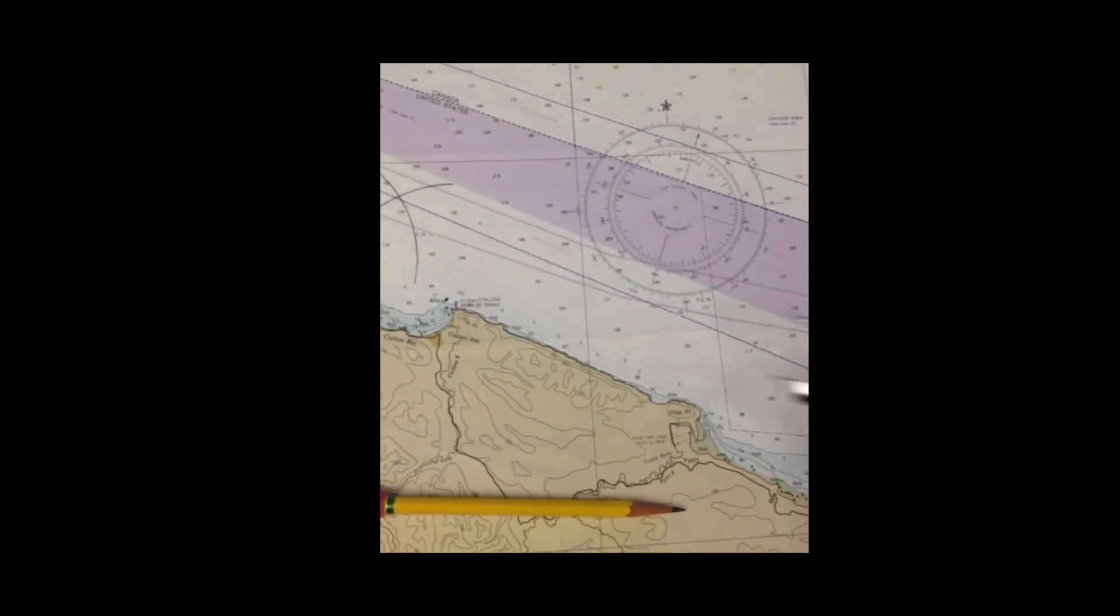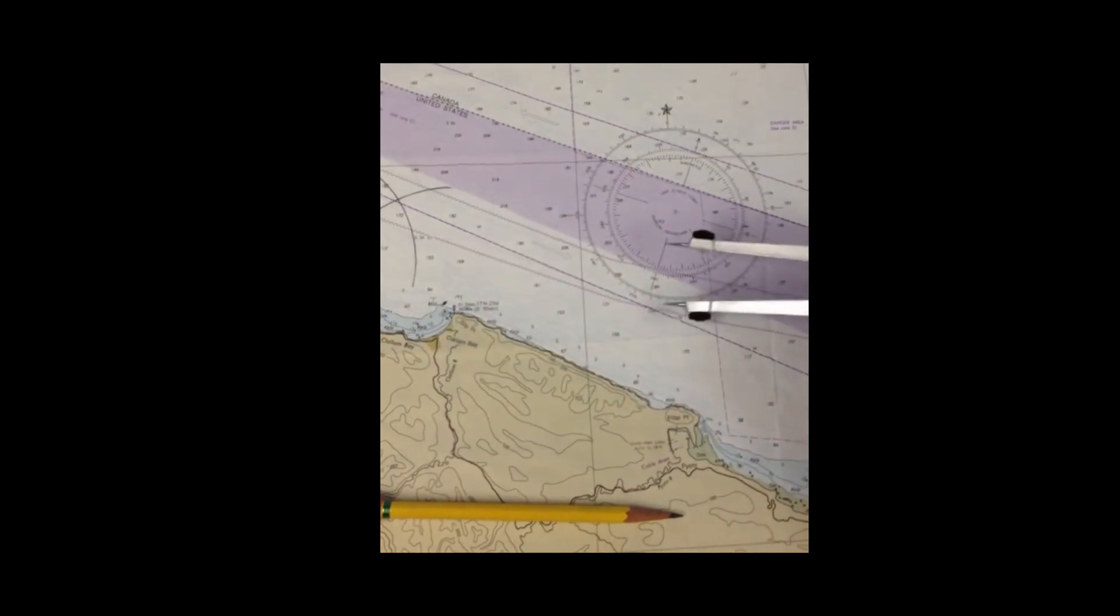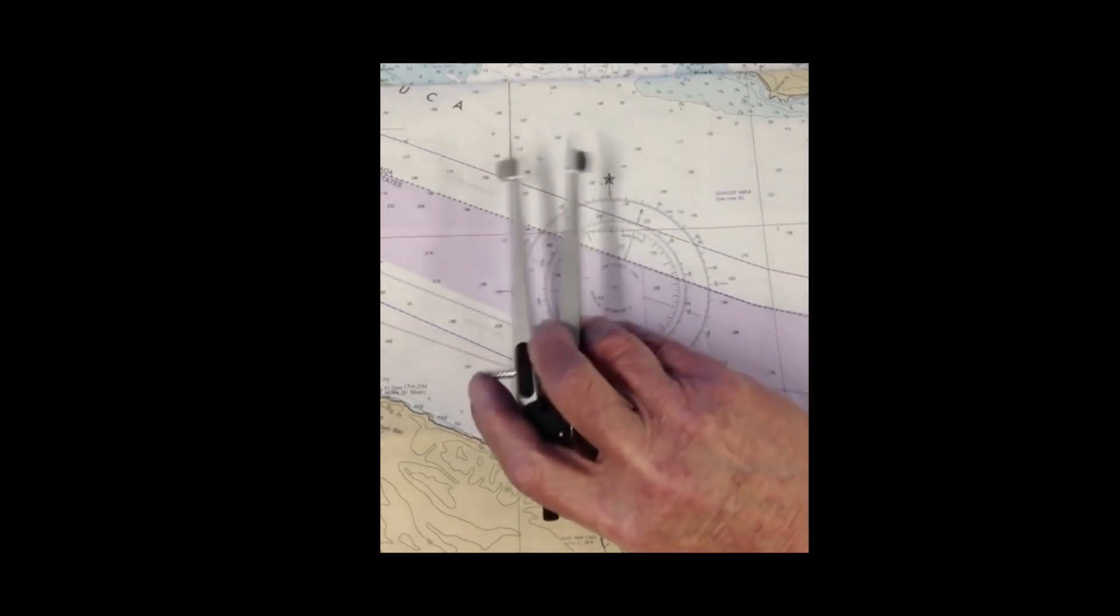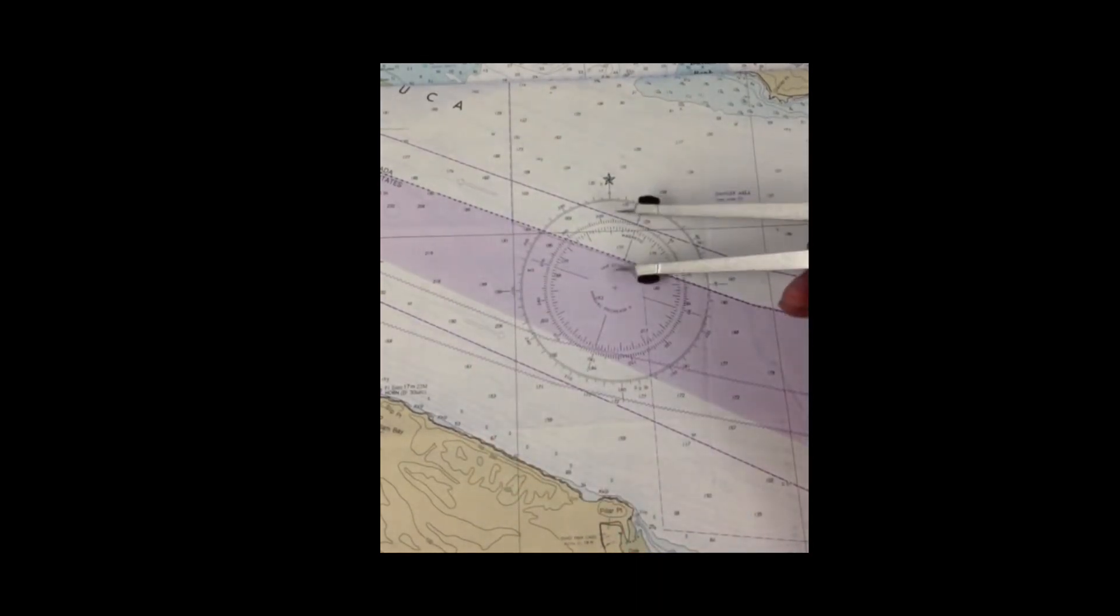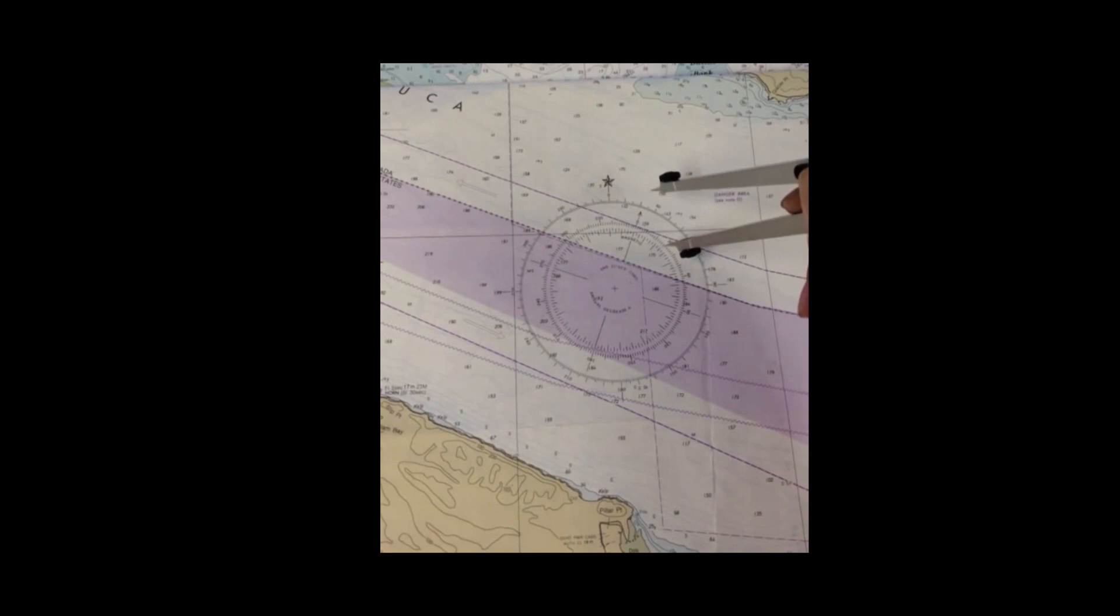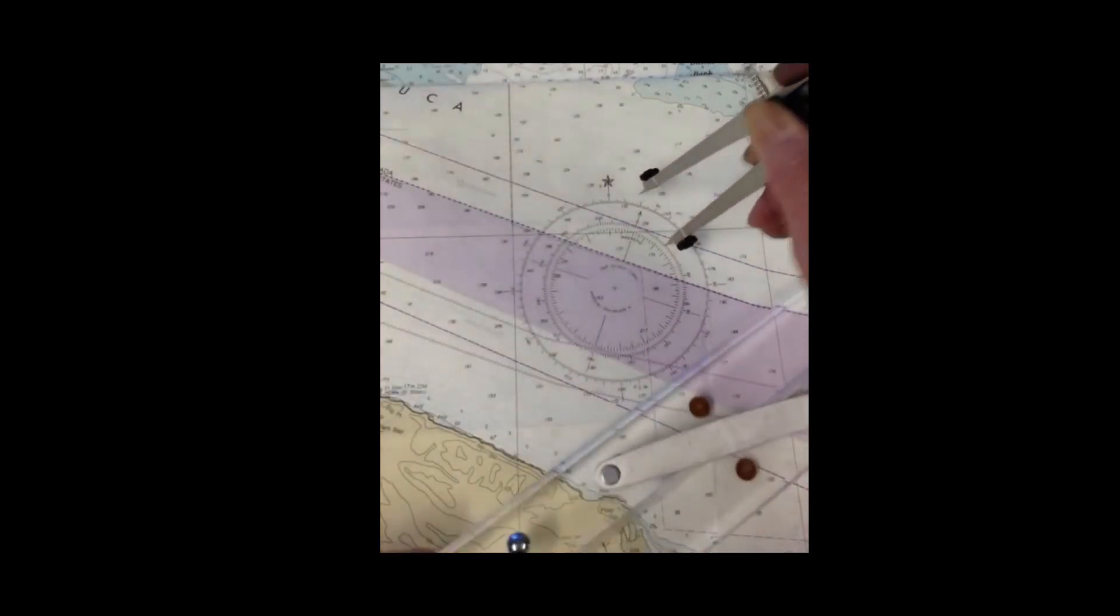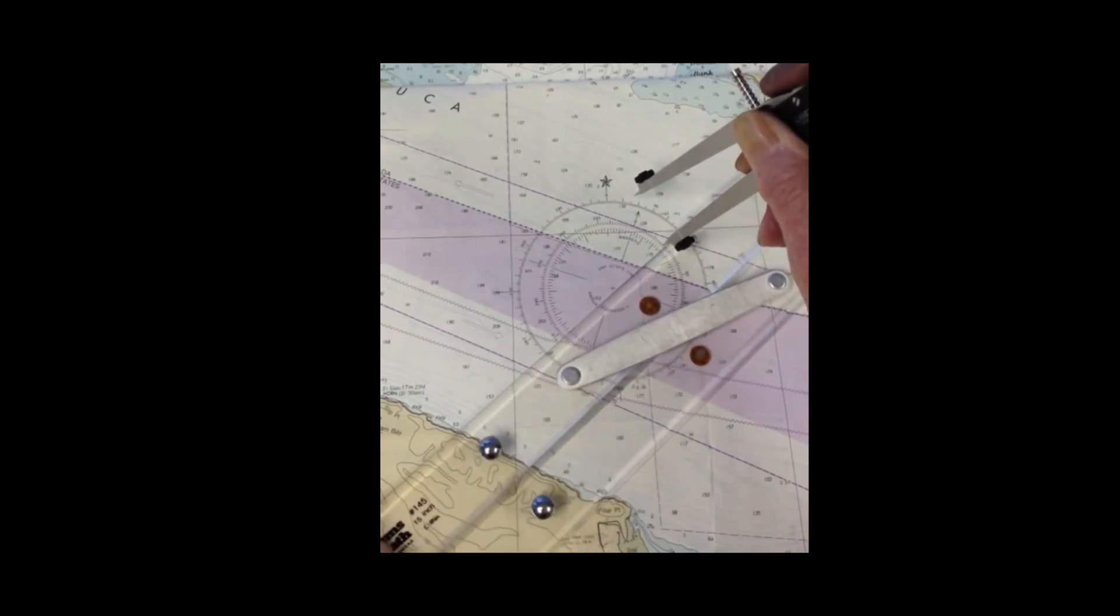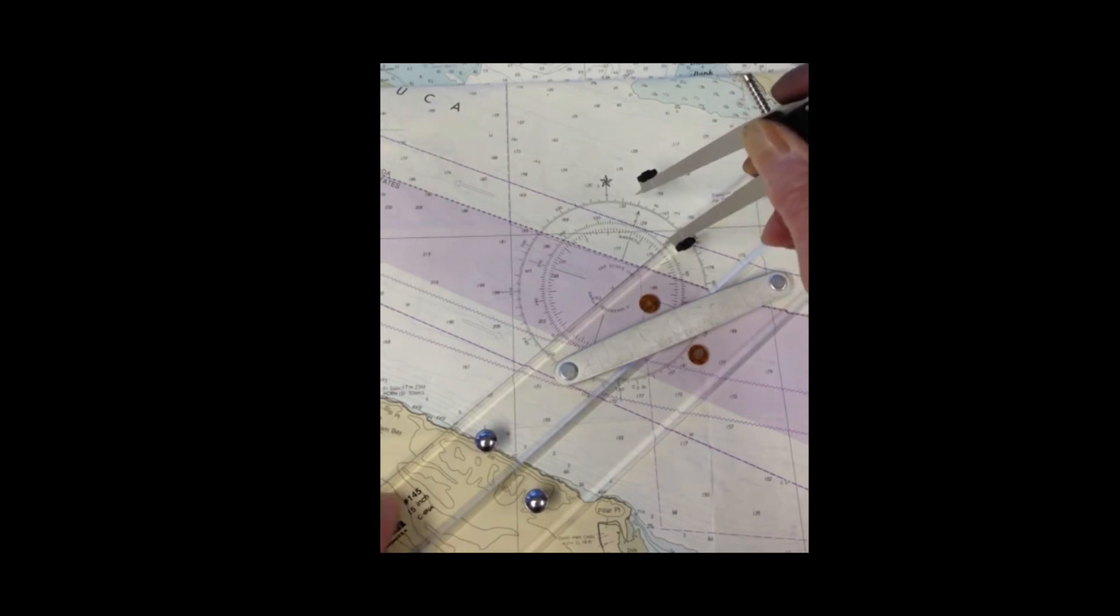We can draw the direction of 030 off the compass rows here. The outer scale is the true scale. The inner circle here is rotated over equal to the variation, in this case about 21 degrees. So that's the direction we want to go. The normal trick underway is you plant those in there, then put the parallel rollers up to it, rotate it up until it just crosses that center X like that.